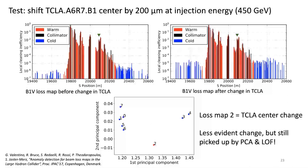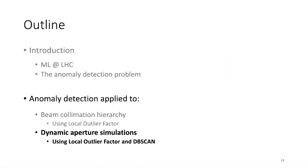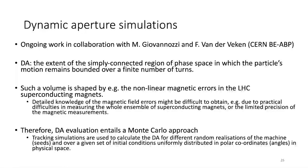That was the first example. Now I'll move on to the second application of anomaly detection: dynamic aperture. Unlike the previous work, this is ongoing work in collaboration with Massimo Giovannozzi and Frederik Van der Veken from ABP at CERN. The idea is to automatically detect anomalies in dynamic aperture simulations.